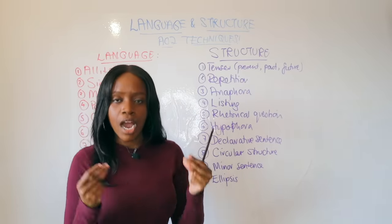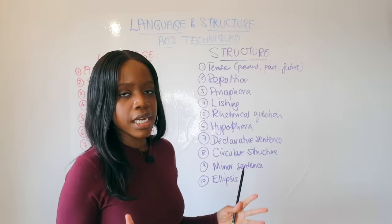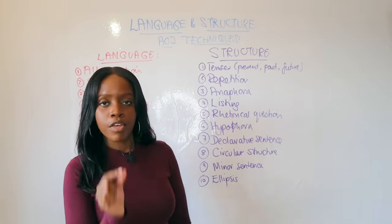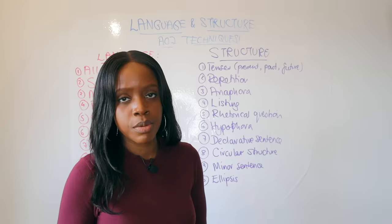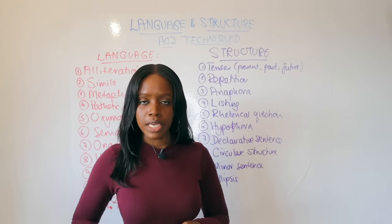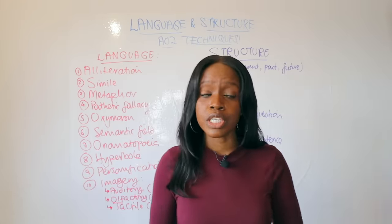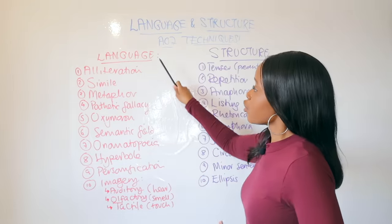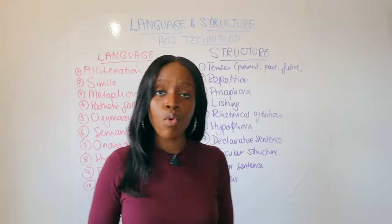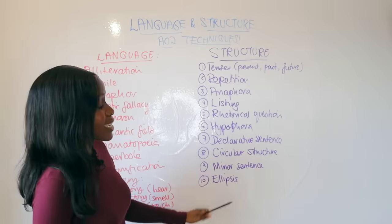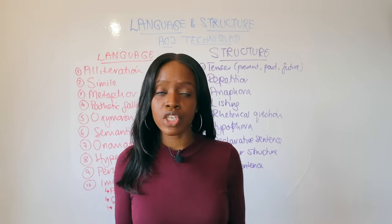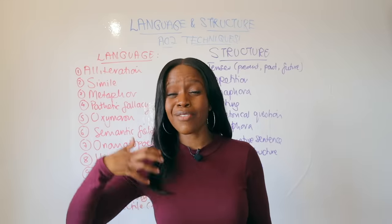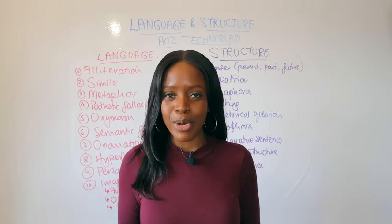So you're reading and gliding along the page, and then suddenly there's just one word — a minor sentence — which creates a shock factor. The final structural technique writers love to use is ellipsis — the three dots — interesting punctuation that writers like to use in their writing. When it comes to AO2 and subject terminology, memorize these 10 language and 10 structure techniques and you will be absolutely fine for any text, whether it's for language or literature. Thank you so much for listening.